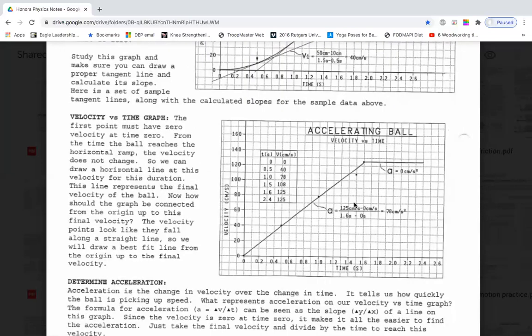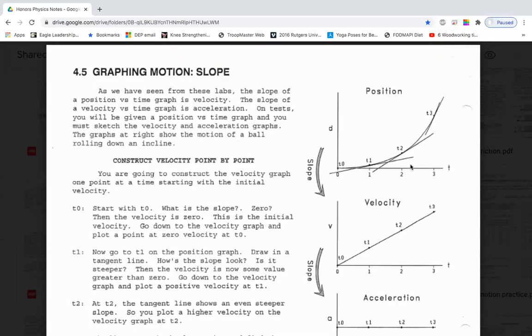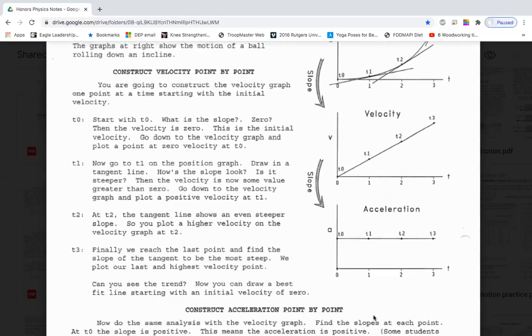This is the ultimate goal of the lab where the ball rolls down the ramp. The slope of the position versus time graph gives us a velocity versus time graph. And the slope of the velocity versus time graph gives us an acceleration. The acceleration is constant for the entire trip.